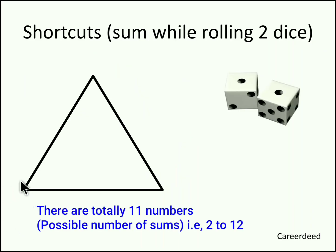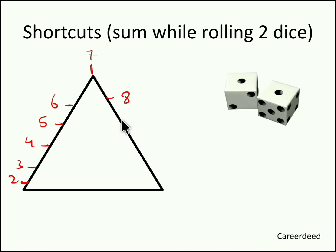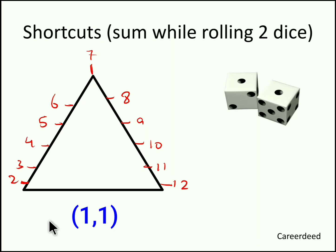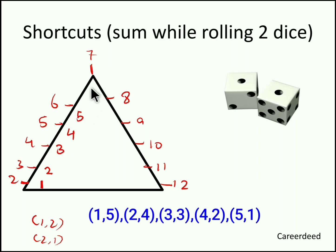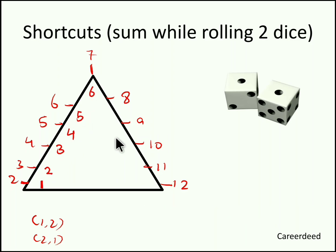We can write the sums in the following structure: sums 2 through 12. The sum 2 occurs only 1 time — only (1,1). Sum 3 occurs 2 times: (1,2) and (2,1). Sum 4 occurs 3 times, sum 5 four times, sum 6 five times, and sum 7 six times. Then in descending order: sum 8 five times, sum 9 four times, sum 10 three times, sum 11 two times — that is (5,6) and (6,5) — and sum 12 only 1 time.